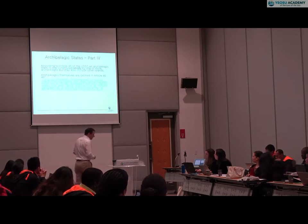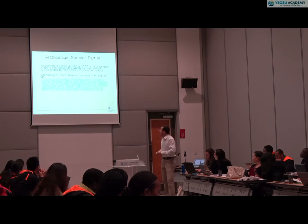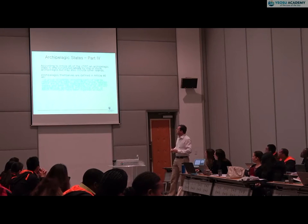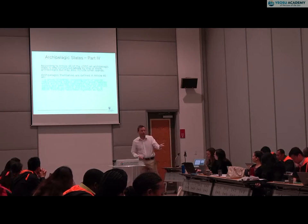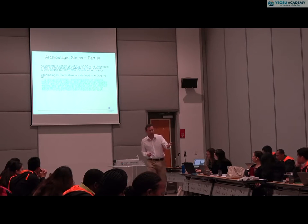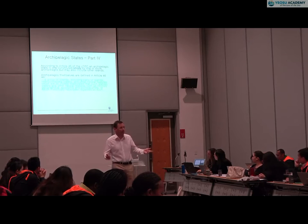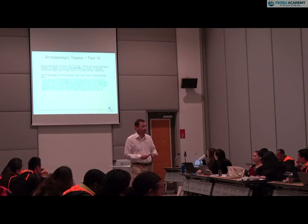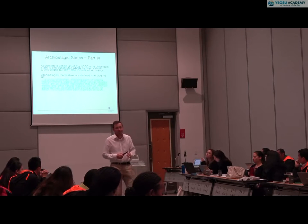So this is the definition of what an archipelagic state is — a group of islands, including parts of islands, interconnected waters and so forth, all historically bound together. Why is that slightly strange phraseology? We know that an archipelago is composed of islands. Why parts of islands?